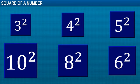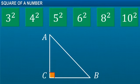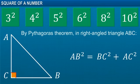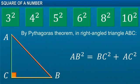Now, let us talk about some more interesting square numbers. Remember the Pythagoras theorem? This theorem states that in a right-angled triangle, the square of the hypotenuse is equal to the sum of the squares of the other two sides. That is, AB square is equal to BC square plus AC square.